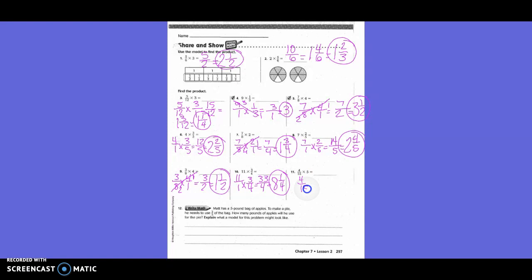Number eleven: write it as four-fifteenths times three over one. Can I simplify before I begin? Yes — what is the common multiple of five and fifteen? Five. Five goes into five once, five goes into fifteen three times. Four times one is four, three times one is three. The answer is four-thirds.